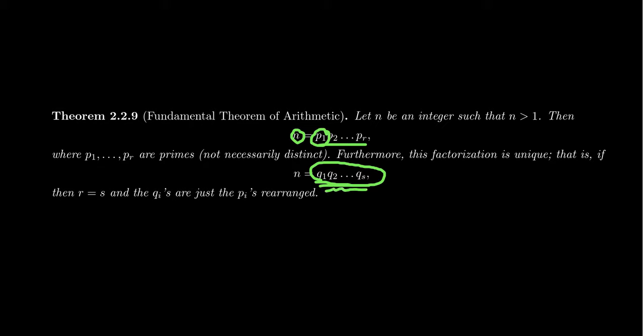p1 divides n and therefore divides the product. So p1 must divide one of the factors. Since each factor is itself prime, the only things that divide a prime are one or the number itself. So p1 equals one of the qi's—without loss of generality, say q1.